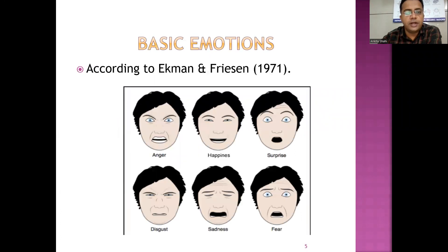According to Ekman and Friesen, who proposed this in 1971, basic emotions include anger, happiness, surprise, disgust, sadness, and fear.